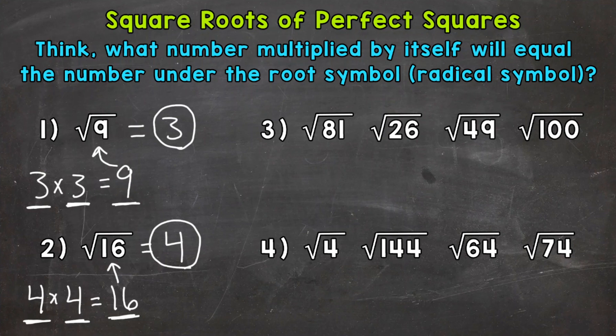Starting with number 3, first we have the square root of 81. We need to think about any numbers that multiply by themselves to get 81 — well, 9 times 9. So 81 is a perfect square, and the square root of 81 equals 9. We get a whole number answer, so I will put a check there.